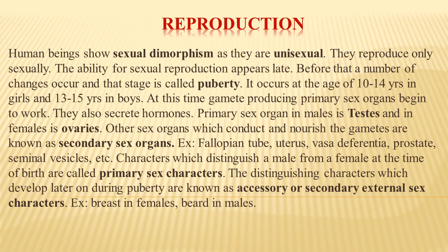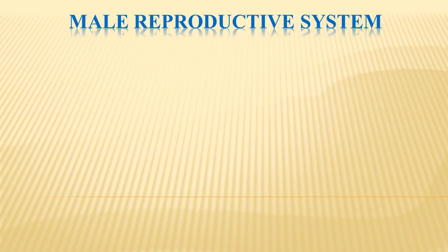Other secondary sex organs also start functioning during puberty to nourish the gametes. Examples include the fallopian tube, uterus, vas deferens, prostate gland, and seminal vesicles. Certain characters that distinguish males and females at puberty are called secondary sexual characters, and these are under the influence of hormones — for example, breasts in females and beard in males. To perform the entire process of reproduction, two important systems play a role: the male reproductive system and the female reproductive system.